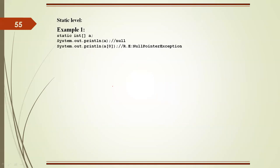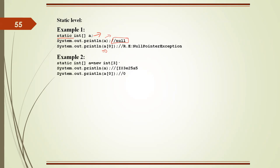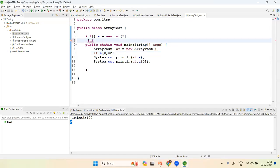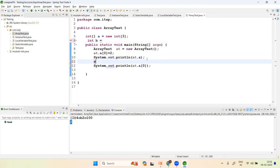For the static level, we declare a static variable using the static keyword. If you print a static array reference before initialization, it will also give null. If we declare a static int 'b' (not an array), the default value is zero because int is a primitive — whereas an array is an object so its default is null.